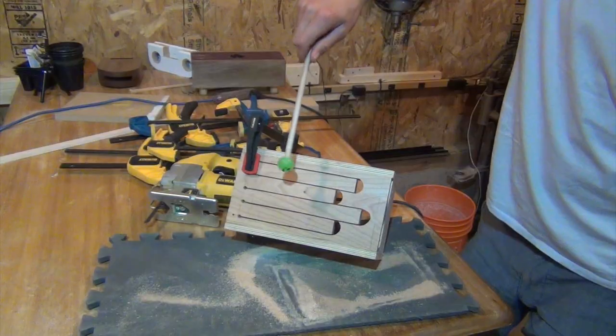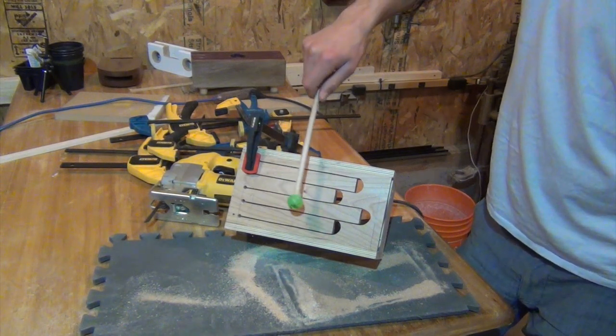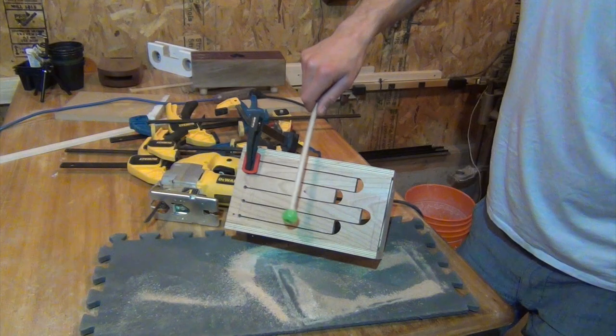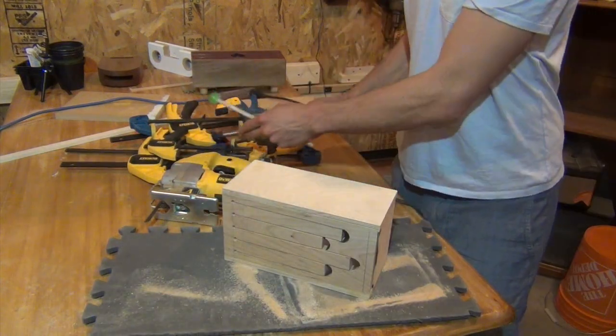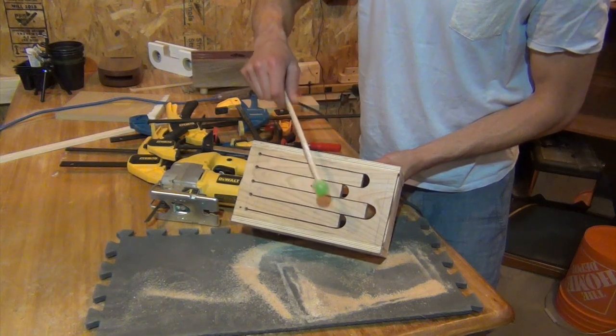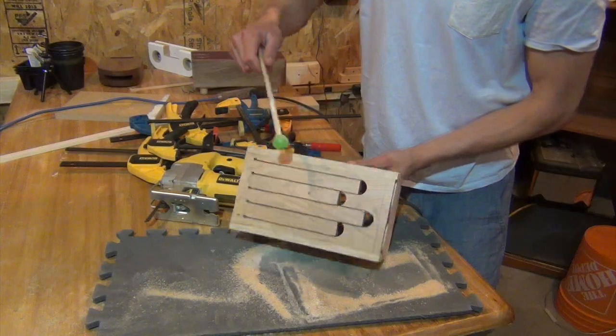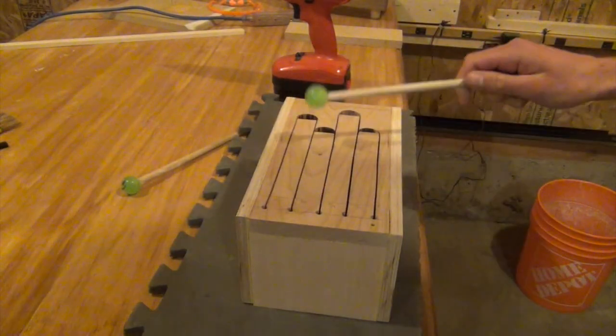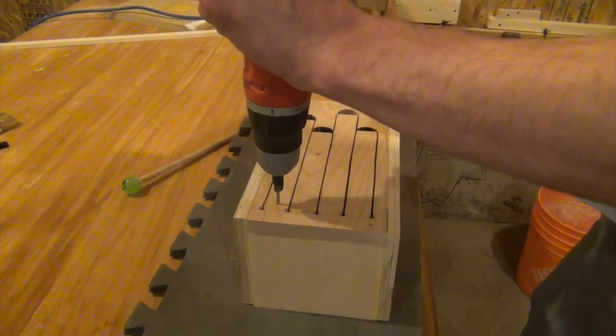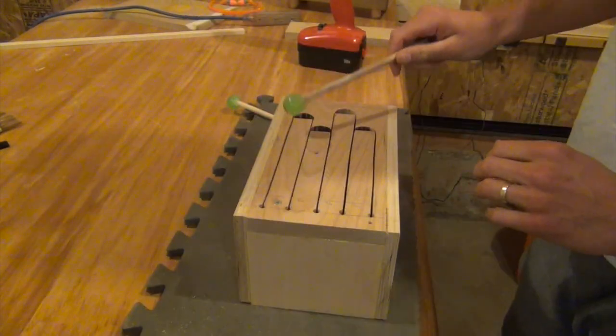So right away I noticed a buzz on one of the tongues. This was due to cutting the tongues before the glue up, causing one of the tongues to be bent down during clamping. As you could hear, clamping down the base of the tongue fixed the buzz. So I decided to screw it. Turns out screwing is a great way to remove unwanted buzz.